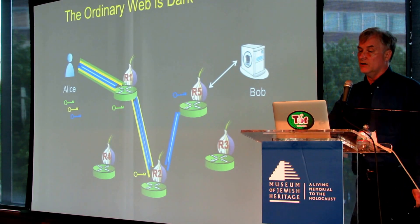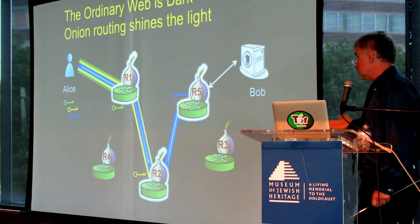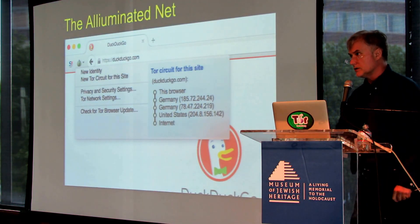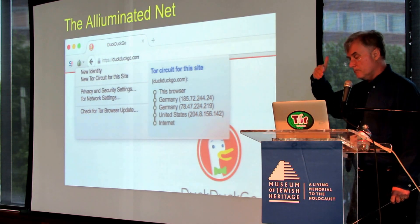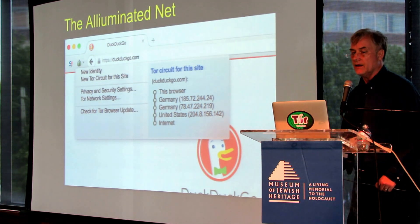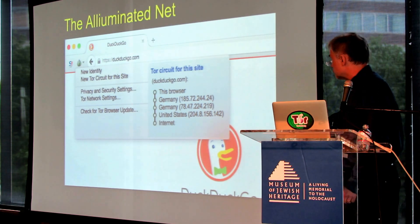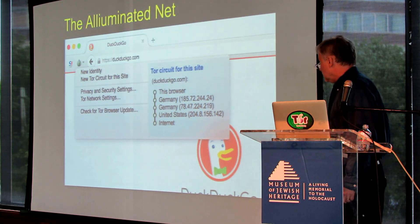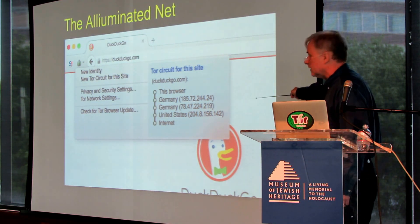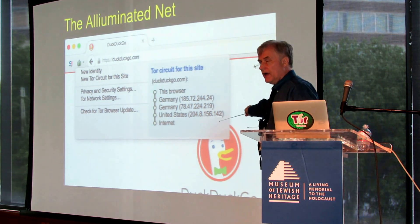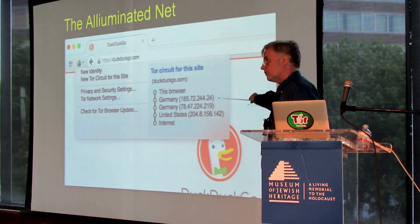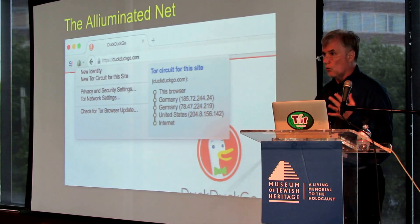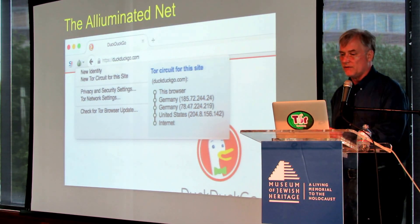Onion routing is in a position to shine some light on that. As indicated, you have this multi-hop encrypted path. This is just a screenshot connected to the DuckDuckGo search engine, and it shows you exactly what the IP addresses were that you routed through. And this isn't just identified — this is authenticated because of the cryptography. These are cryptographically authenticated locations. So this is one of the few places where people actually know where the traffic is going.